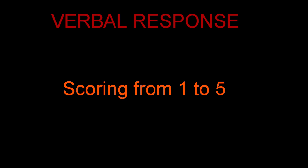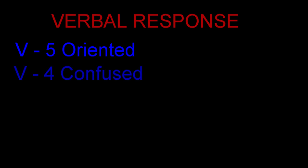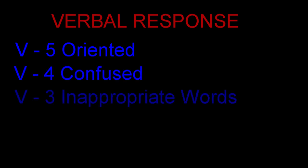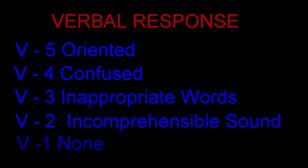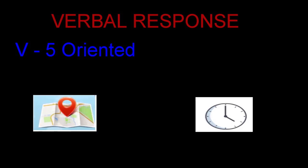While assessing verbal response, the scoring is from 1 to 5. V5 is oriented, V4 is confused, V3 is inappropriate speech, V2 is incomprehensible sounds, and V1 is no verbal response. V5, oriented, means the person has a normal level of consciousness. We ask the patient regarding their name, where they are currently, and the date, day, or time to check person, place, and time orientation. If they are able to give the correct answers, they are oriented.